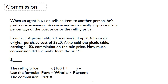Well, let's first figure out what the selling price was. We know that the original purchase cost was $320 times 100% plus the 25% markup. That's going to give us $400, and that's going to be the selling price.